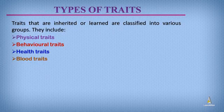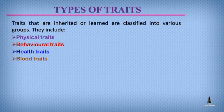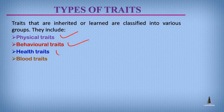Inherited traits and learned traits can be classified into the following groups: physical traits, behavioral traits, health traits, and blood traits. Let us briefly describe each of these types of traits.